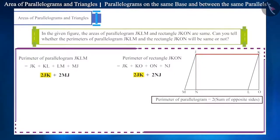Here, 2JK is common to both sides. Therefore, to compare the perimeters of parallelogram JKLM and rectangle JKON, we have to compare their sides MJ and NJ. We can write it like this. Can you tell what would be the relation between the two?